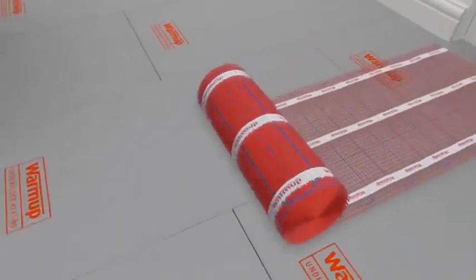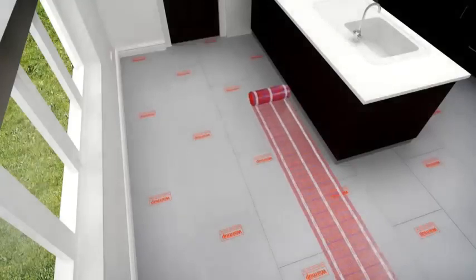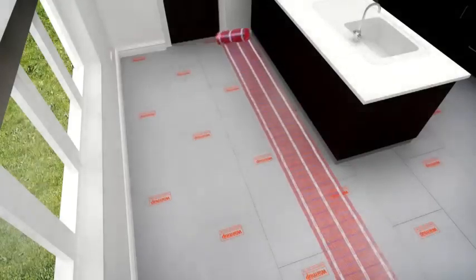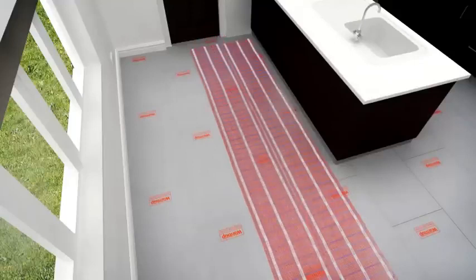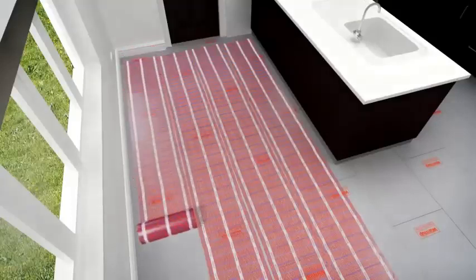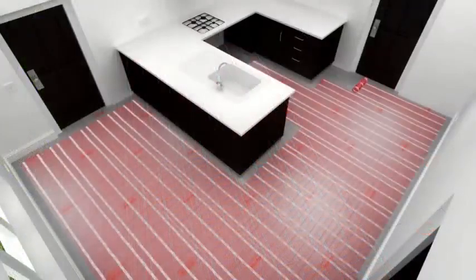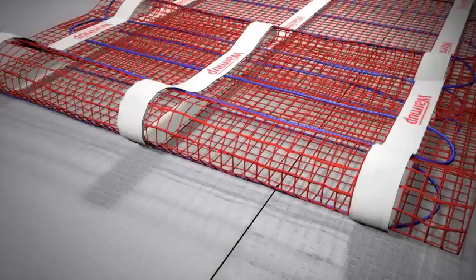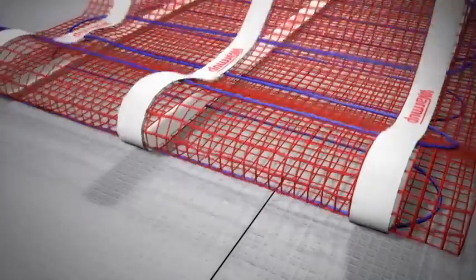The matting system can be cut and turned and modified to fit a specific area. Never cut the heating wire and be careful not to damage the heating cable. Affix the matting to the subfloor using the double-sided tape on the mat.